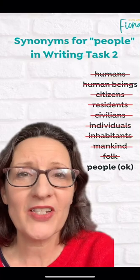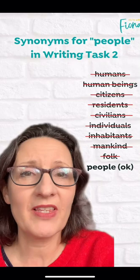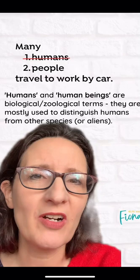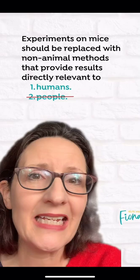If you're trying to use synonyms for people in IELTS Task 2, most of these are wrong. An alien might say many humans travel to work by car, but you only say humans when you're distinguishing them from maybe animals or aliens.